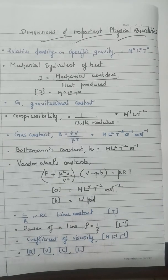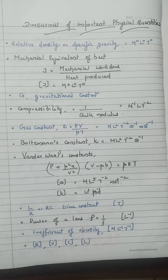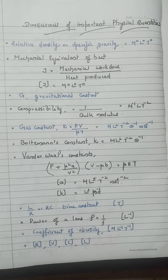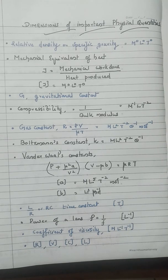Going through the dimensions of important physical quantities for examination: relative density or specific gravity is dimensionless. The mechanical equivalent of heat — applicable when linking mechanical work and heat production in the CGS system — is also dimensionless. Other important terms include the gravitational constant, compressibility (reciprocal of bulk modulus), and the gas constant, where R equals PV/nT.